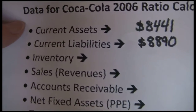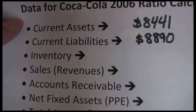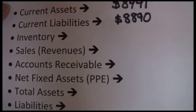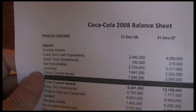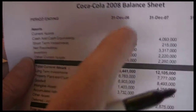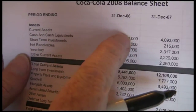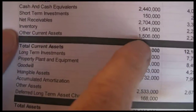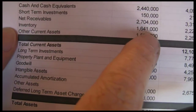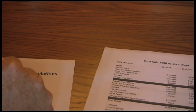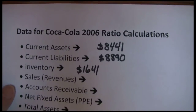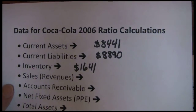Next up we want inventory. Inventory is a current asset so it's also going to be found on the balance sheet. Going to our 2008 balance sheet for the 2006 fiscal year, there we can see inventory at $1,641,000. We write that down — inventory at $1,641,000.